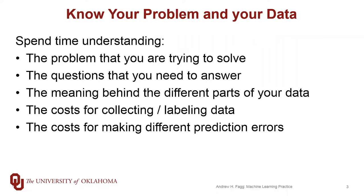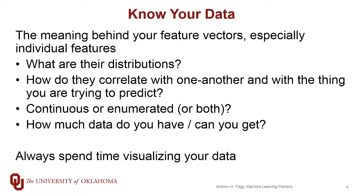The first point of advice is making sure that you always know what problem you're trying to deal with and know your data. What are you trying to solve? What questions are you trying to answer with your data? It's also important to understand what the costs are for collecting, pre-processing, or labeling data. When making predictions, sometimes it doesn't matter whether errors are false negatives or false positives, but in other scenarios, especially when lives are at risk, it makes sense to make only one kind of error.